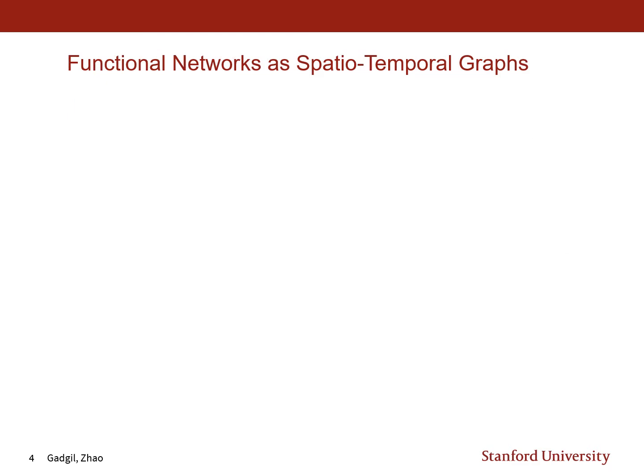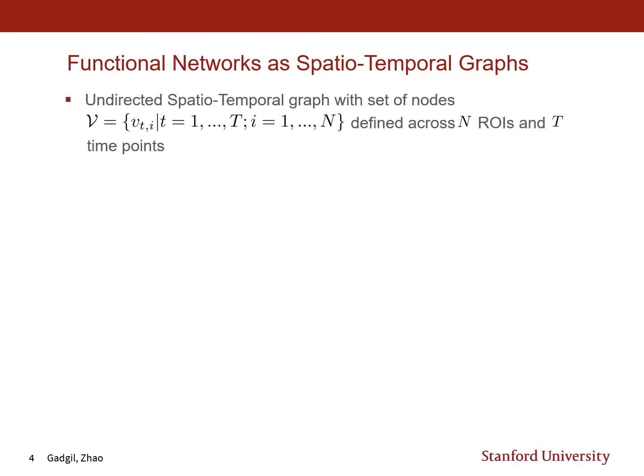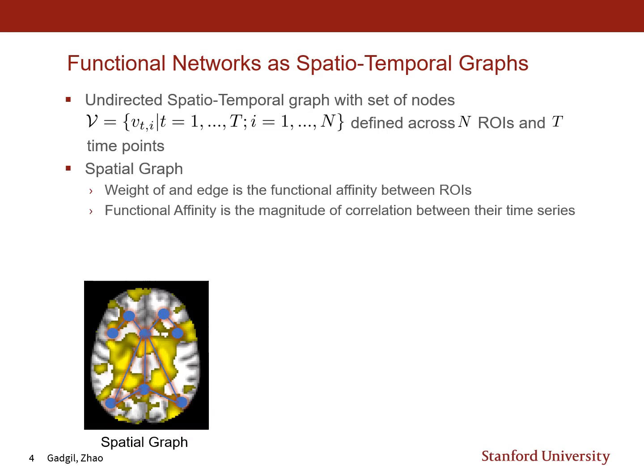In order to consider these functional brain networks as spatiotemporal graphs, we define a set of nodes V across N regions of interest of the brain and T time points, where T is the length of the BOLD signal. The spatial graph is constructed by considering each ROI to be a node connected with edges, where the weight of these edges is the functional affinity between the ROIs.